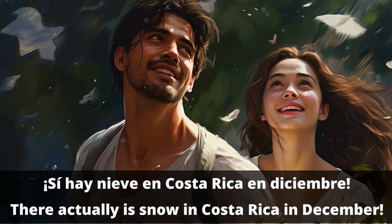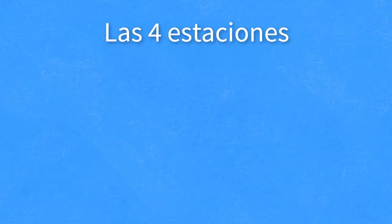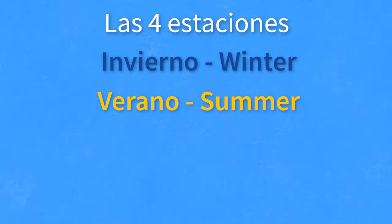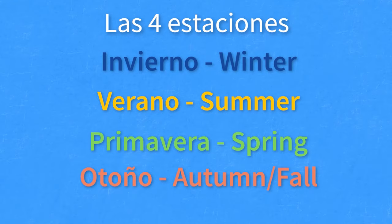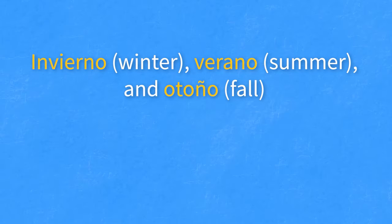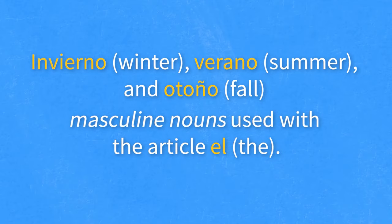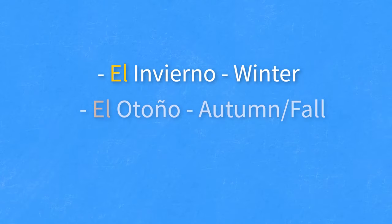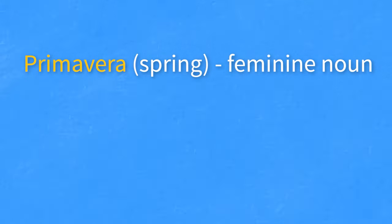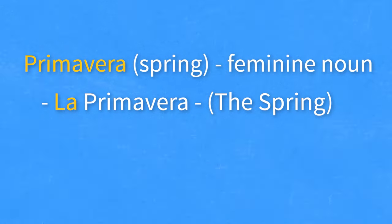Let's now dive into the seasons — las estaciones en español. Invierno — winter. Verano — summer. Primavera — spring. Otoño — autumn or fall. Invierno, verano, and otoño are masculine nouns and are used with the article el. This is because in Spanish, nouns ending in O are usually masculine. That's why we say el invierno, el otoño, el verano, and la primavera. The word primavera, spring, is a feminine noun, so it is used with the article la — la primavera, the spring.